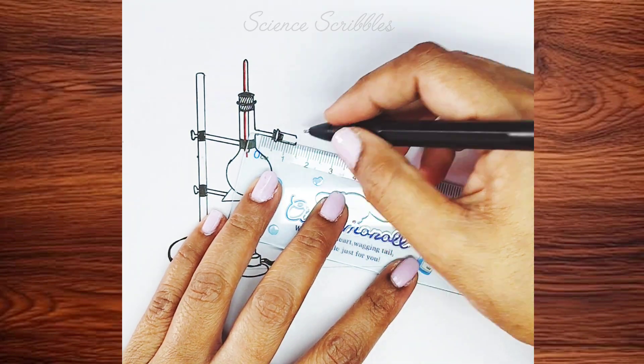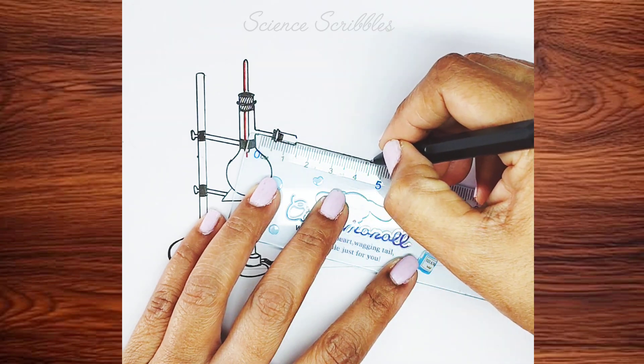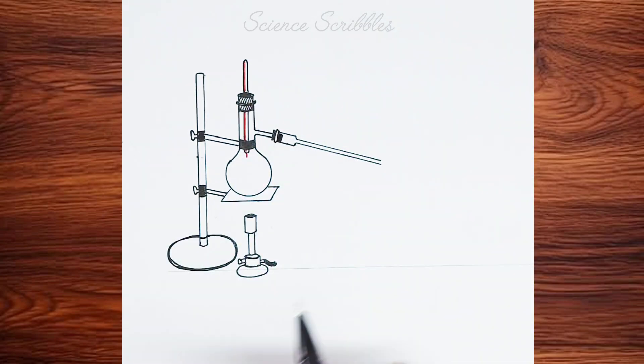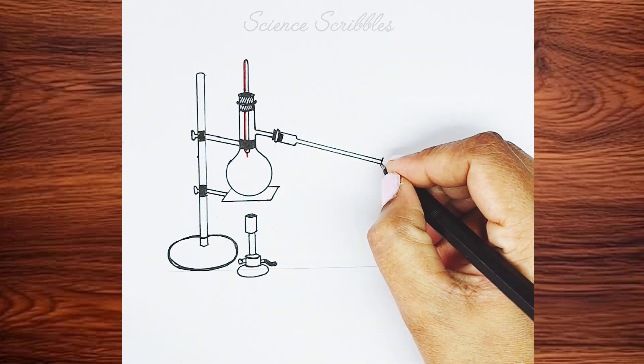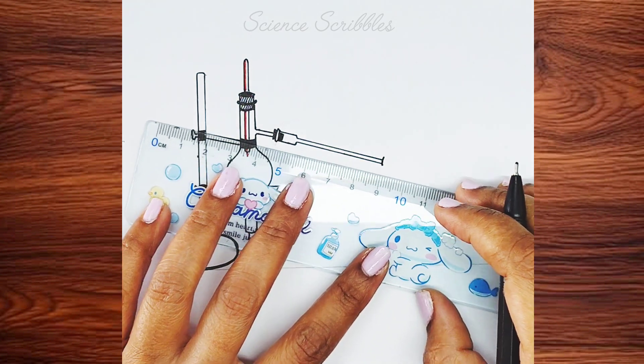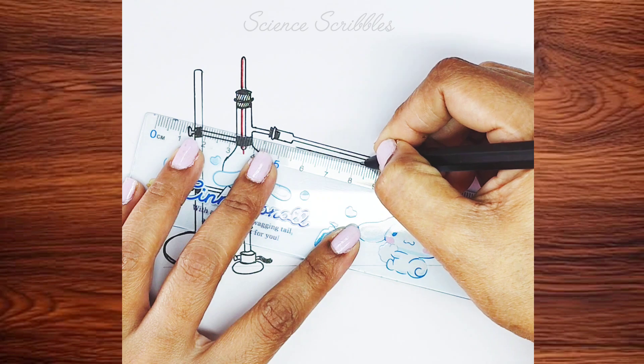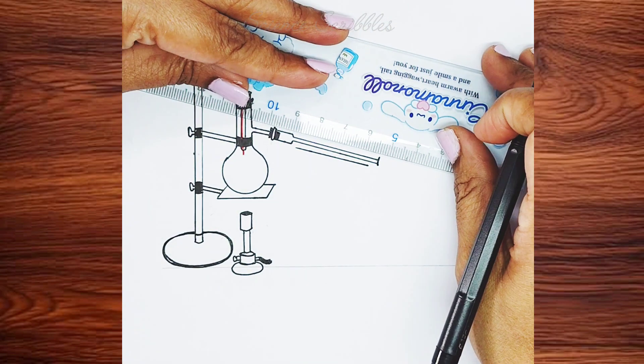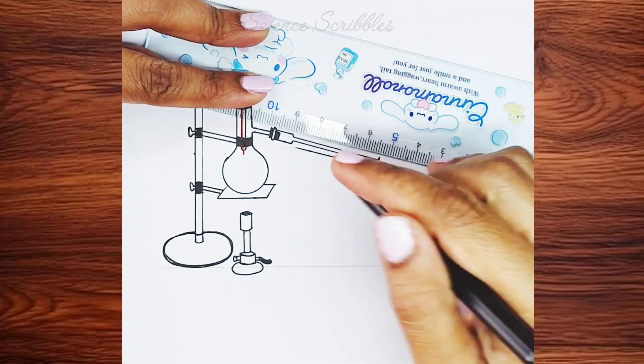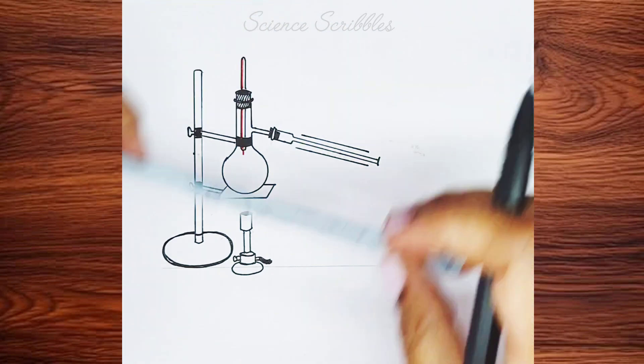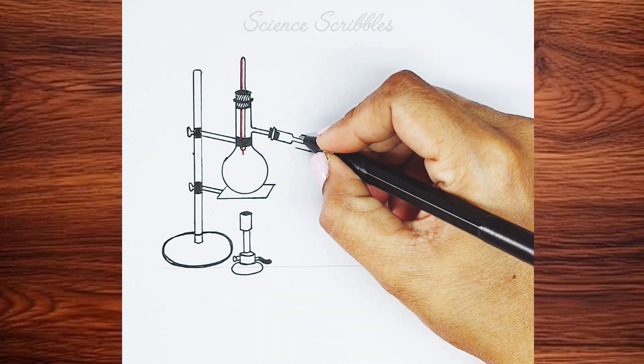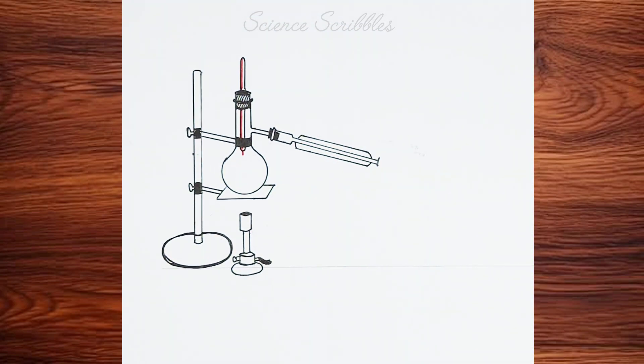This part represents the condenser. So, we are now drawing the condenser. Now, you need to draw two slanting lines on top of the tubes and connect them using a small curve. This forms the condenser.